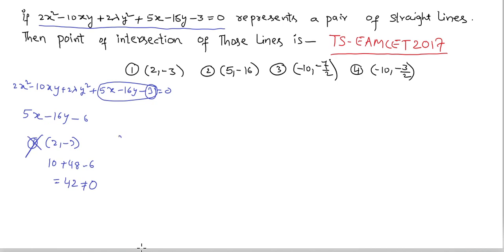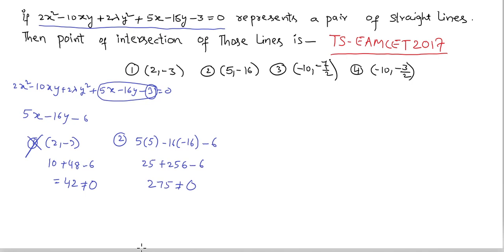Checking the second option: 5×5 - 16×(-16) - 6 = 25 + 256 - 6, which equals 275, not equal to zero. So the second option is also wrong.